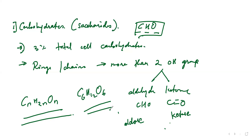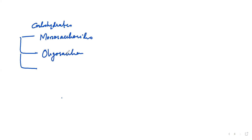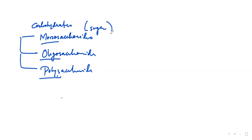Initially, carbohydrates are divided according to how many sugar units are present in them. They are classified into three types: monosaccharide, oligosaccharide, and polysaccharide. Mono means 1, oligo means 8 to 10, and poly means more than 10. Saccharide means sugar. Depending upon how many sugar units are present in them, these names have been given.